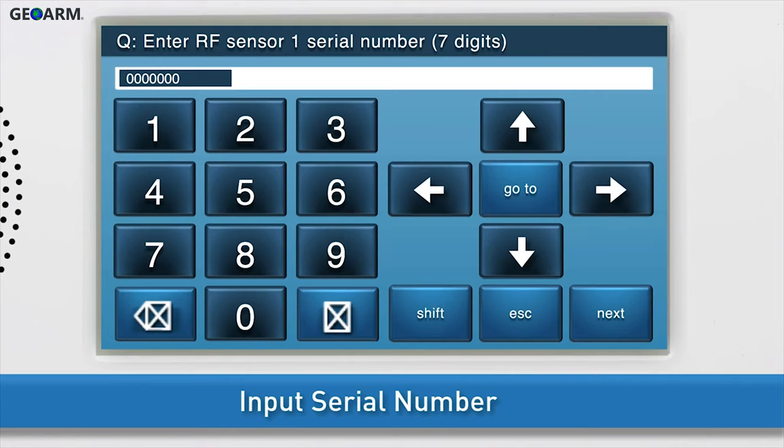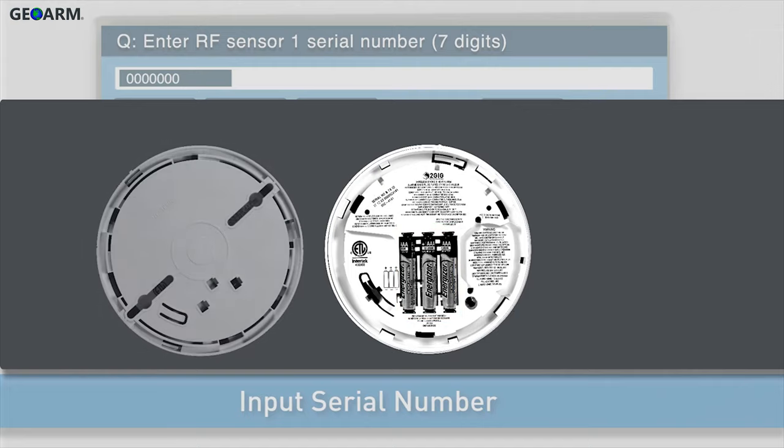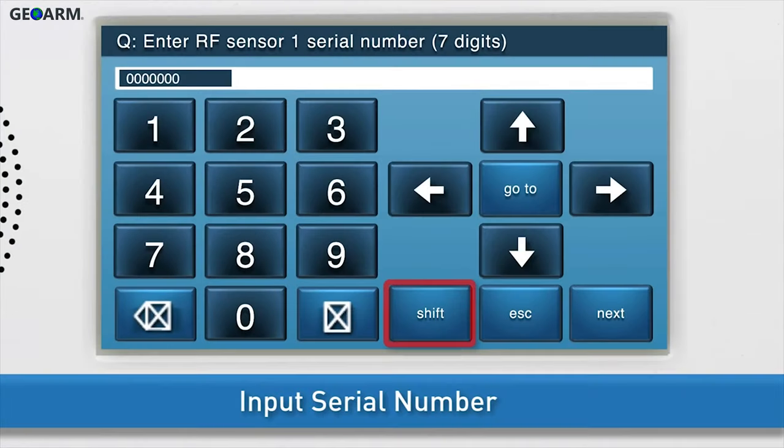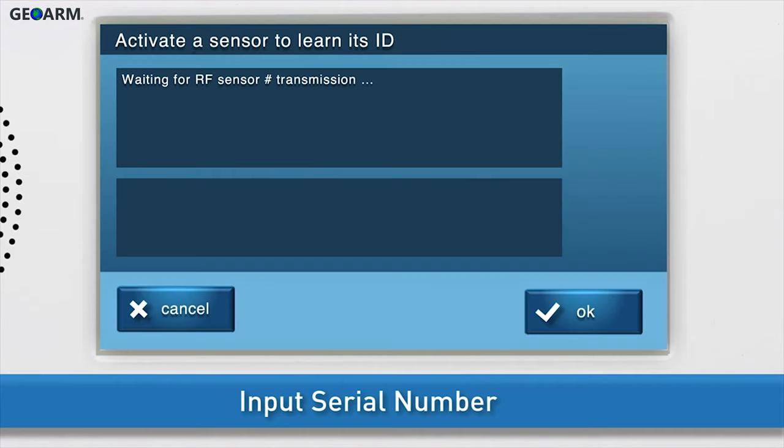If you choose to add the serial number wirelessly, first insert the battery, if you have not done so already, and then attach the mounting base and turn it clockwise to secure. Press SHIFT, then LEARN.